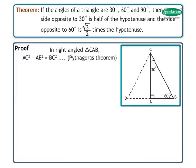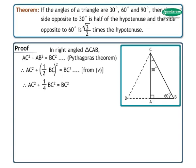In right angle triangle CAB, AC square plus AB square is equal to BC square by Pythagoras theorem. Therefore, from statement 5, we get AC square plus (1 upon 2 BC) whole square is equal to BC square. Therefore, AC square plus 1 upon 4 into BC square is equal to BC square. AC square is equal to BC square minus 1 upon 4 into BC square. Therefore, AC square is equal to 3 upon 4 BC square. Therefore, AC is equal to root 3 upon 2 BC.